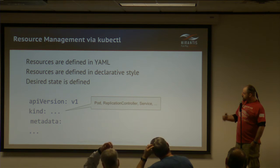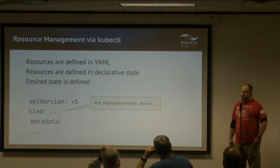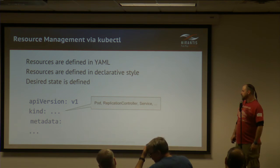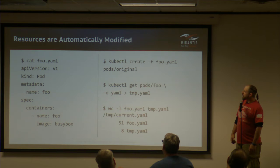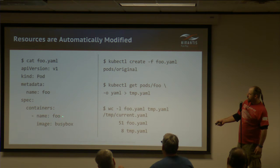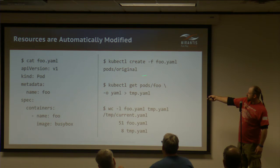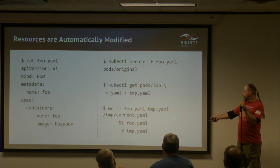Resources are defined in YAML in declarative style — specifying kind (pod, replication controller, service, etc.) and all relevant configuration pieces. For example, create foo.yaml with an image like busybox, kubectl create it, and then kubectl get lists what you've got.